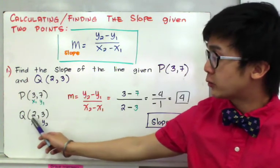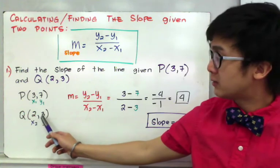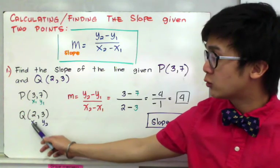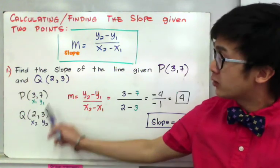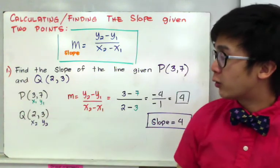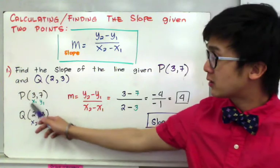And for Q, which is 2 and 3, our second set for x will be x sub 2, which is equal to 2, and y sub 2 equal to 3. So after you have labeled your points using their ordered pairs,